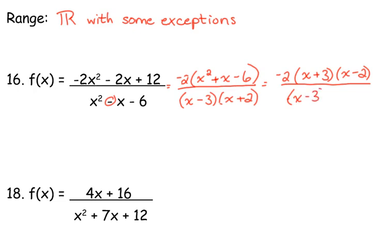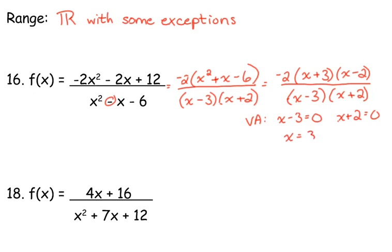This one doesn't have any holes. It came really, really close, but it doesn't have any holes. So our only exclusions from the domain would be our vertical asymptotes. Our vertical asymptotes — we set the denominator equal to zero after simplifying, and it didn't simplify. So we have vertical asymptotes at 3 and negative 2.